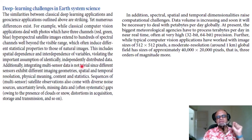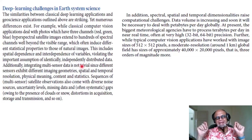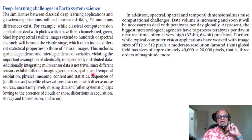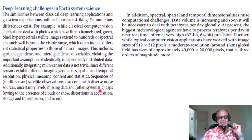If you have temperature, precipitation, winds, and rainfall, they are not independent — they are all related to each other in a very dynamic and thermodynamic way. Additionally, integrating multi-sensor data is not trivial, since different sensors exhibit different imaging geometries, spatial and temporal resolution, physical meaning, content, and statistics.